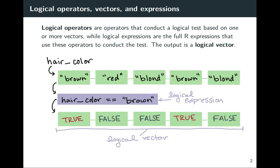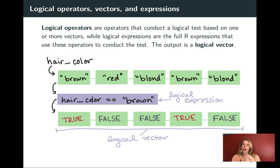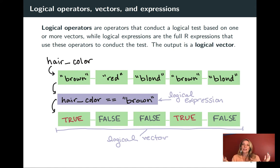I want to start out by defining the difference between those three words. Operators are these special functions that can go in between two arguments. We've already seen them with things like the plus sign or even the pipe operator. We'll use logical operators often to build up a logical expression, which includes the operator but also the parameters it's incorporating. The output from that expression will be a logical vector.